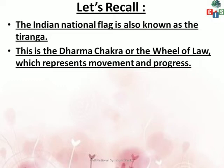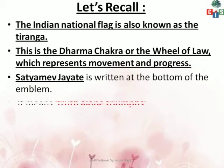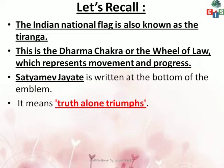The Dharm Chakra represents movement and progress. Now if we talk about our national emblem, what is written on the bottom? Satyamev Jayate. Our national emblem is a four-headed lion, taken from Sarnath, built at the time of Emperor Ashoka. Satyamev Jayate is written below it, which means 'truth alone triumphs' — sachai ki hamesha jeet hoti hai.